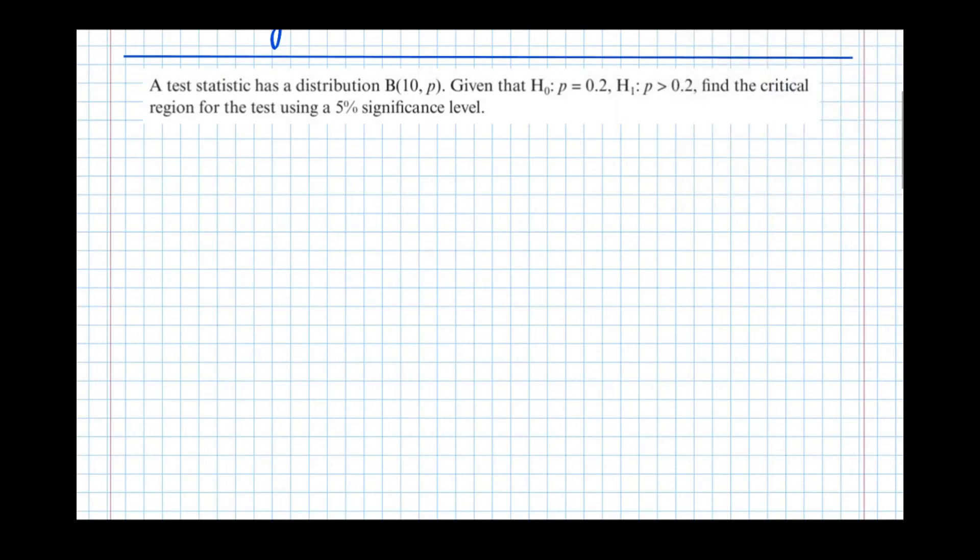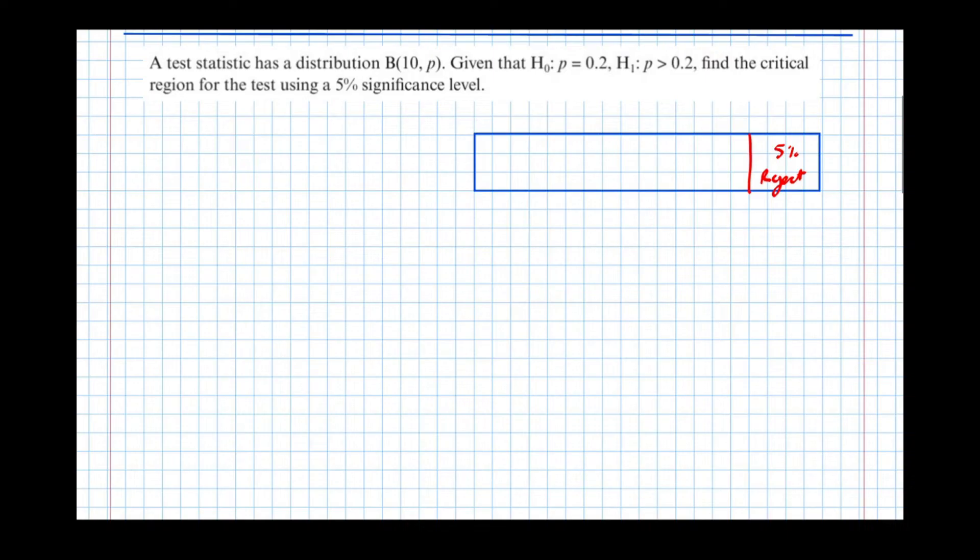So again, let's draw the probability scale. Except this time, we're testing the right-hand tail. We're testing a greater than. So again, we've got a 5% rejection region. And we're going to look at how the calculator features can help us solve this a little bit more easily.